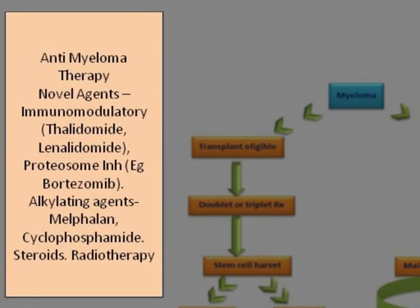The currently used anti-myeloma agents include novel agents, which are immunomodulatory — for example, thalidomide or lenalidomide — or proteasome inhibitors, which include bortezomib and many others currently in studies. These two classes of agents have changed the way we treat myeloma in the last five to ten years. The conventional agents used in treating myeloma are alkylating agents, which include melphalan and cyclophosphamide, and steroids.